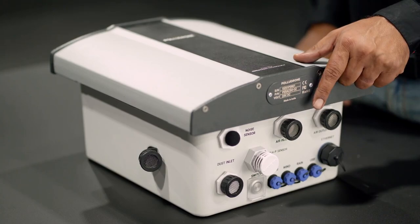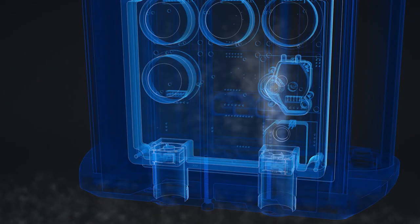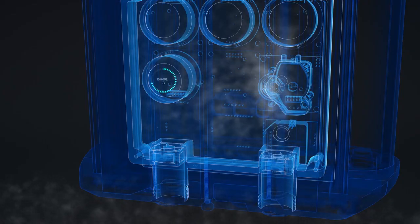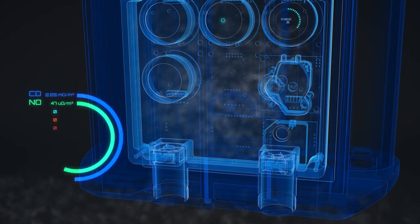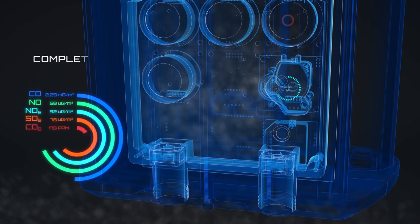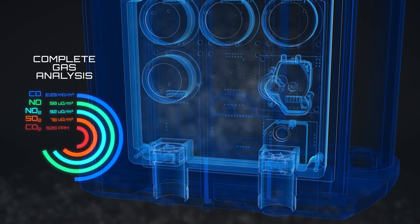Apart from dust, gases like SOx and NOx are also major causes of respiratory diseases. The Polydrone measures toxic gases through active sampling by taking a sample of air through this inlet every 2 minutes. This sample is analyzed by different gas sensors working on proven principles like electrochemical, NDIR and PID. Complete gas analysis is done by measuring the concentration of SOx, NOx, ozone and carbon oxides.